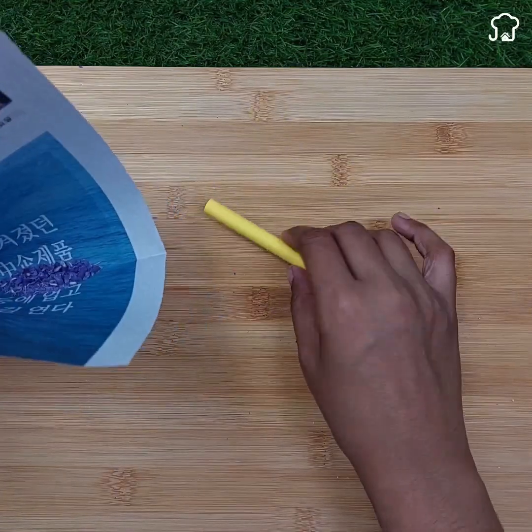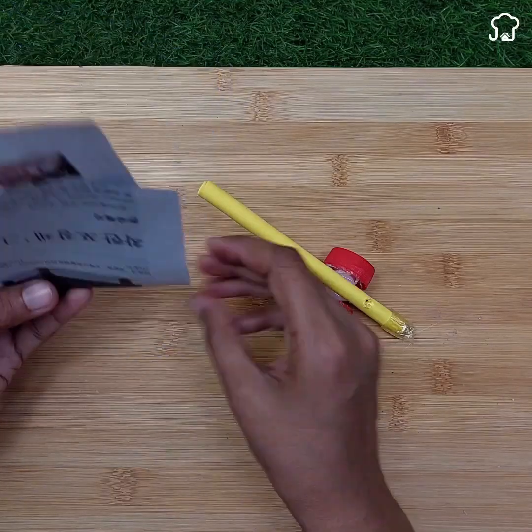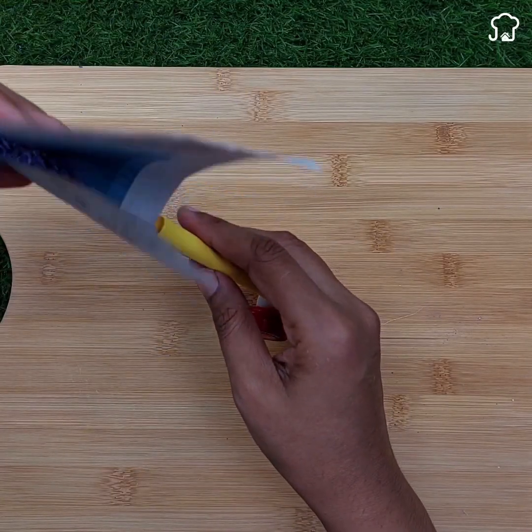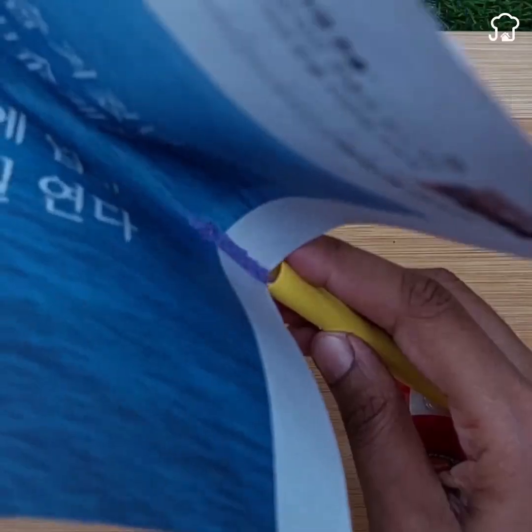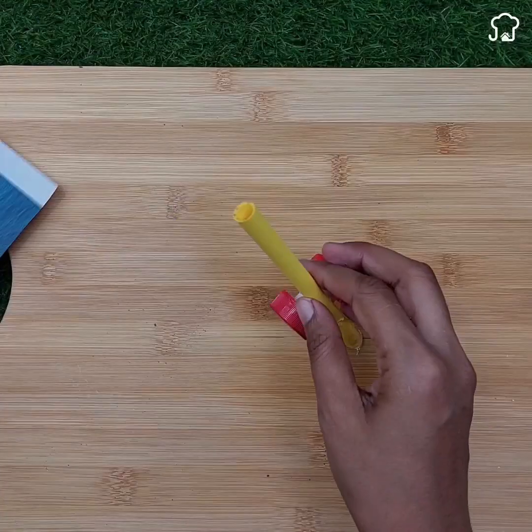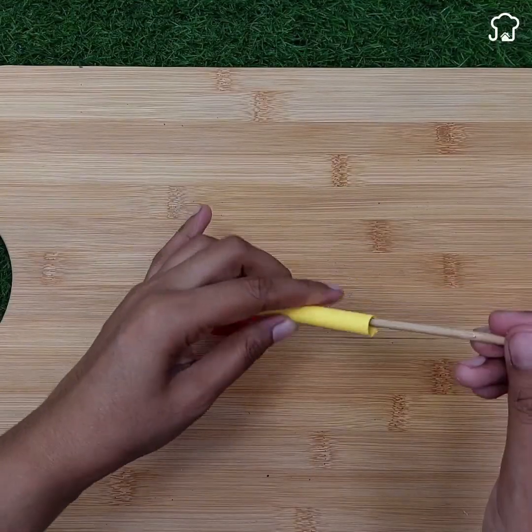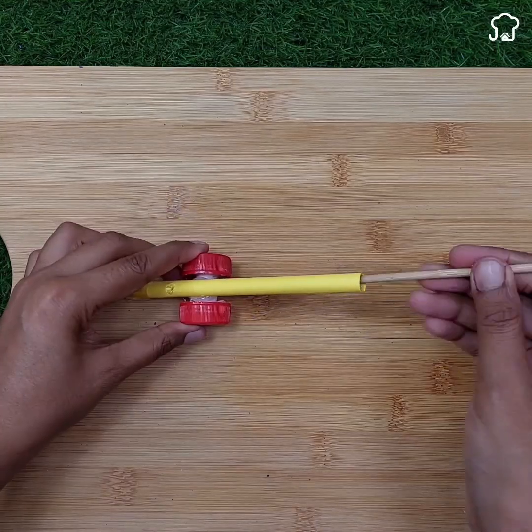We fold the sheet with the phosphor and very carefully we will throw it into the cardboard cylinder. Then we will press it with a wooden stick to bring it down to the bottom.